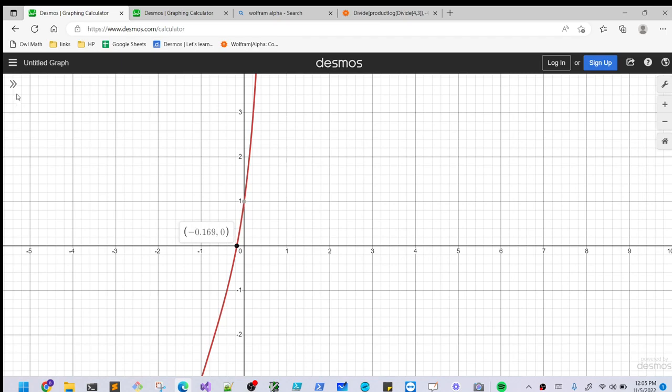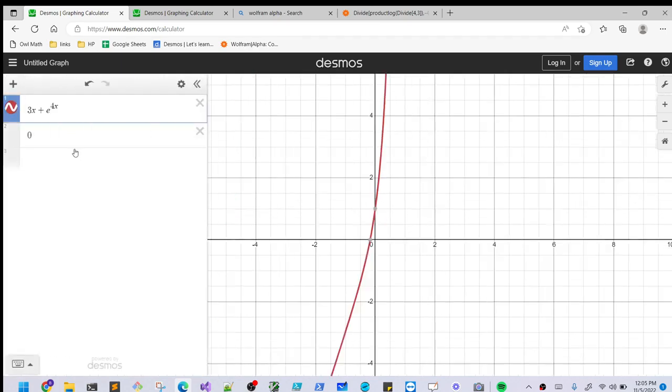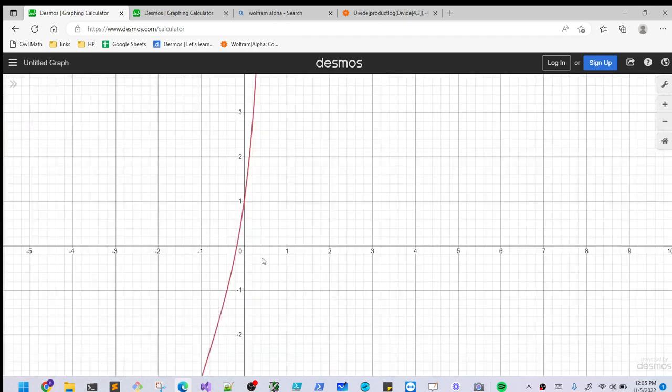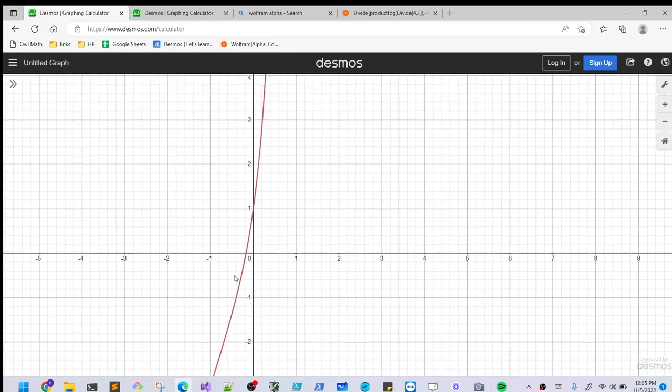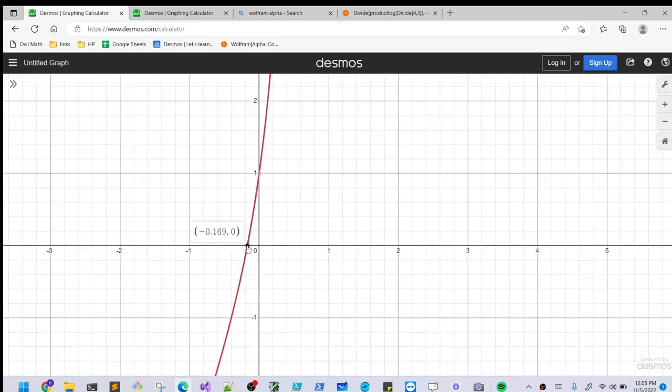Then we can look at the graph of this function. This is the graph of 3x plus e to the 4x. And we can see where it intersects one, and we'll see that it intersects right at about minus 0.169.